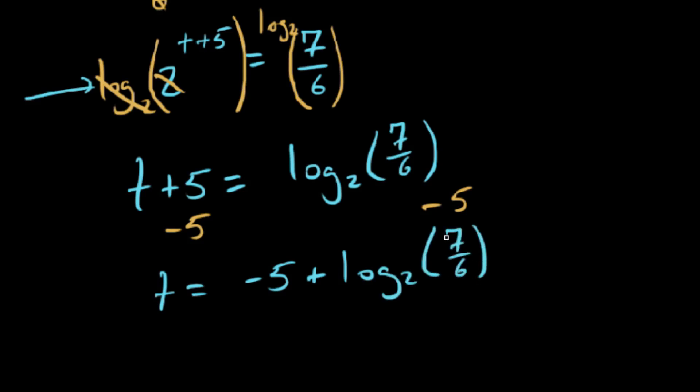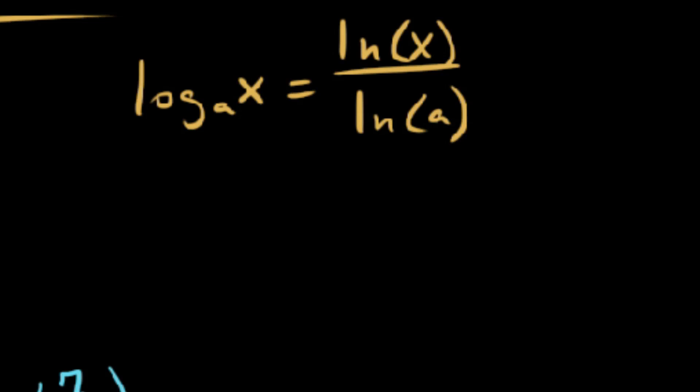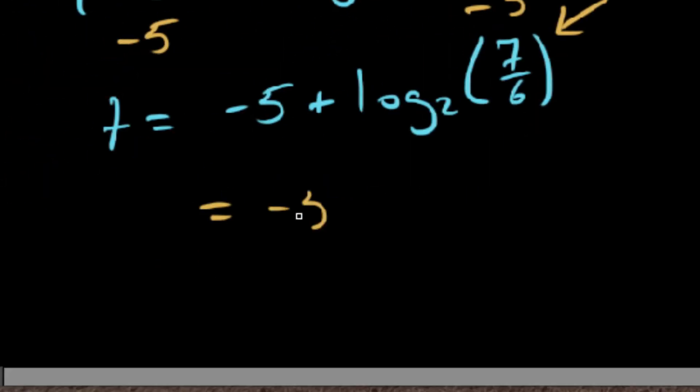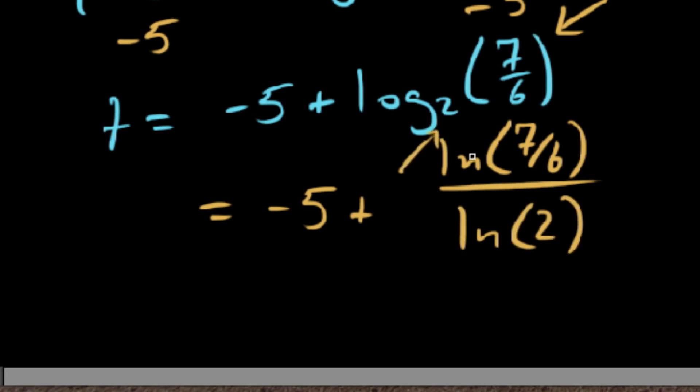So now we can let a calculator do the rest of the work for us. I think probably the most tedious part of this problem is the fact that we have to use change of base on this log base 2 because our calculator doesn't have a log base 2 button. So change of base formula, recall, is this: we say log base A of x is the same thing as ln of the large thing here, ln of x over ln of our base A. So we can now rewrite this as the same thing as negative 5 plus ln of 7 sixths over ln of 2, which was our base on our log, and 7 sixths was our large thing here.